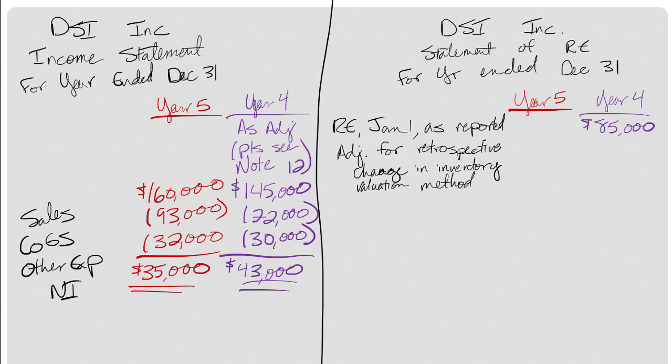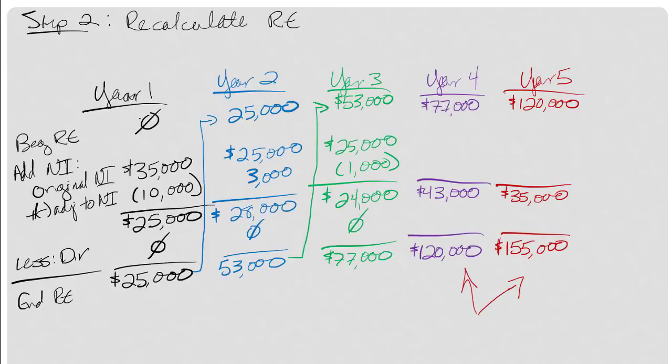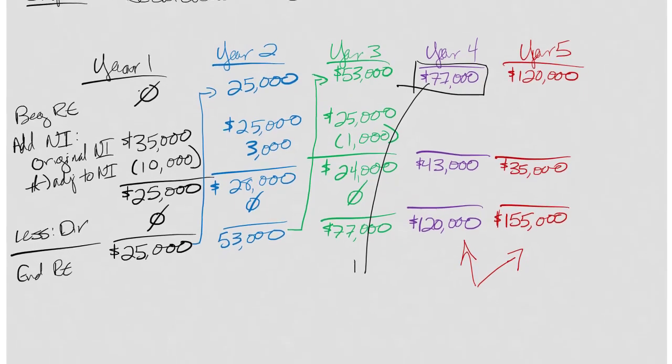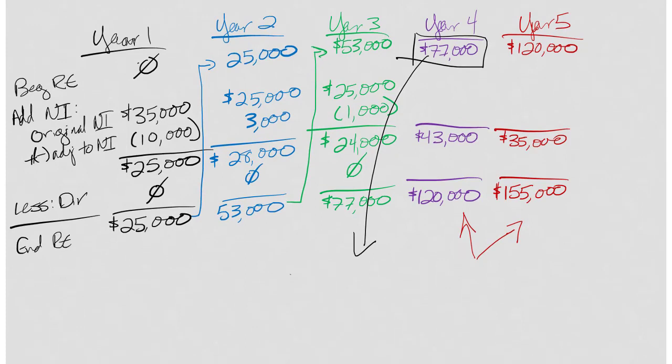My next line item is adjustments for the retrospective change in inventory valuation method. What we're looking for is the net change to retained earnings from the $85,000 I have as my beginning retained earnings to what it really should be under the new method. The best place to do this calculation is on our previous step two table. I want beginning retained earnings in year four to be $77,000, but it's not. It's at $85,000.